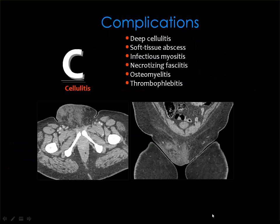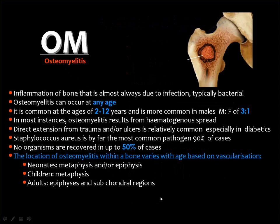The complications of cellulitis include deep extension of the infection, formation of soft tissue abscesses, extension to the underlying muscles. If the infection is aggressive it may lead to necrotizing fasciitis. If it reaches the bone it may lead to osteomyelitis, and whenever infection is near vessels it may lead to thrombophlebitis.